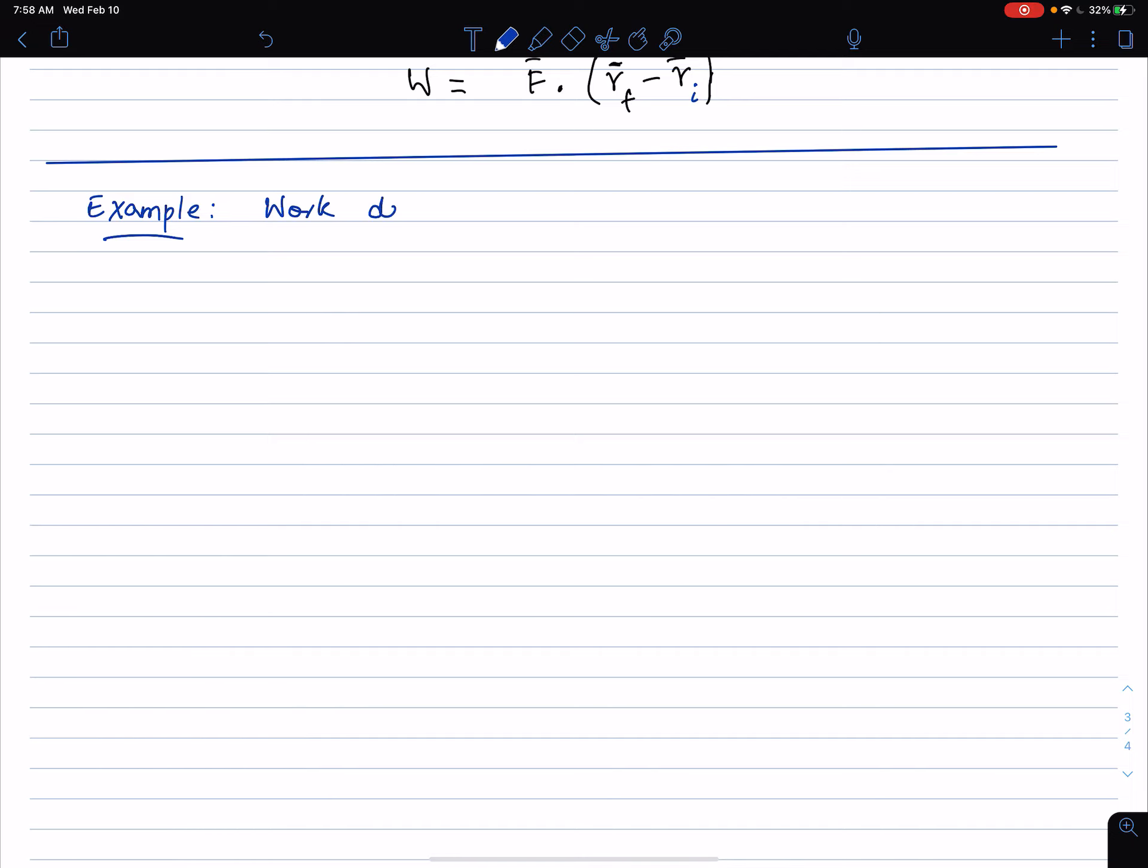Work done by gravity. Determine work done by gravity on a point mass, basically when I say point mass we mean particle, mass m, when the mass goes from position, this is now a general 3D problem, position vector r_i to position vector r_f. That's the question.